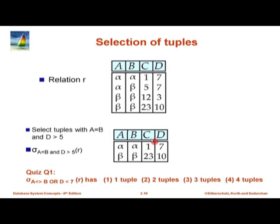There is a quiz question: select where A not equal to B or D less than 7. The first tuple: A not equal to B fails, and D less than 7 also fails — it is out. The second tuple satisfies A not equal to B — it is in. The third satisfies D less than 7 although it does not satisfy A not equal to B — so it is also in. The last one fails A not equal to B and also fails D less than 7. So the output is the middle two tuples, and the answer is 2 tuples.